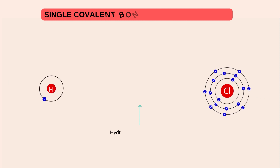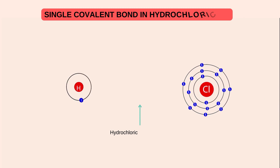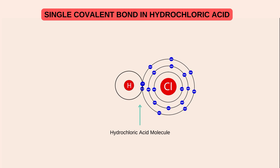Single covalent bond mein dusri example hydrochloric acid ki hai. Hydrochloric acid, jis se HCl se represent kiya jata hai, is mein hydrogen aur chlorine stability achieve karne ke liye apne valence shell mein ek ek electron ki mutual sharing karte hai, aur hydrochloric acid mein convert ho jate hai.